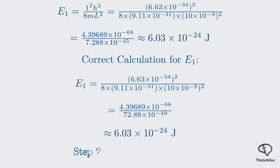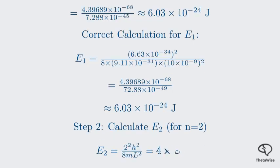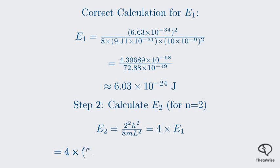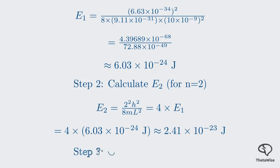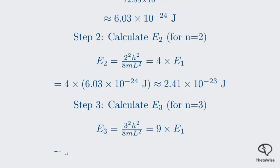Next, let's find E₂ for n equals 2. The formula tells us that Eₙ is proportional to n². This means E₂ is 2², or 4, times E₁. So we multiply our value for E₁ by 4 to get about 2.41 times 10⁻²³ joules. Finally, for E₃, we set n equal to 3. E₃ will be 3², or 9, times E₁. Multiplying E₁ by 9 gives us approximately 5.43 times 10⁻²³ joules.